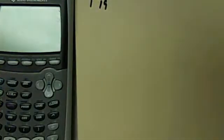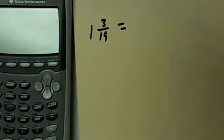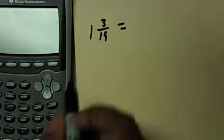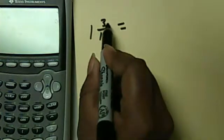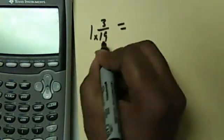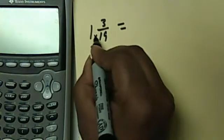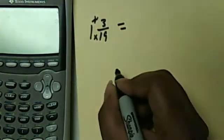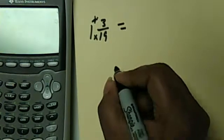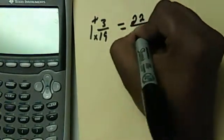Now normally by hand we would change a mixed number by multiplying the denominator times the whole number and add the numerator. So this would be 1 times 19 which is 19, and then plus 3 plus the top, which would give us 22 over 19.